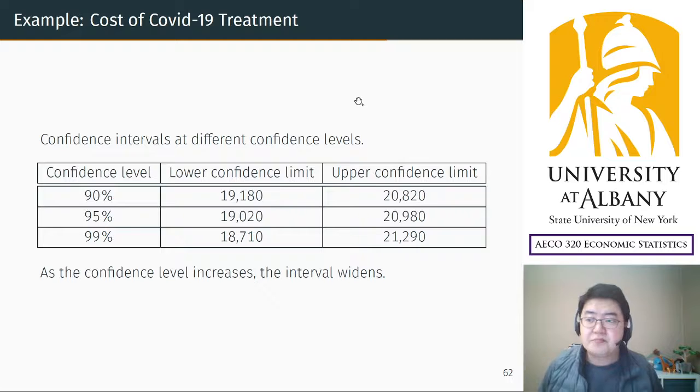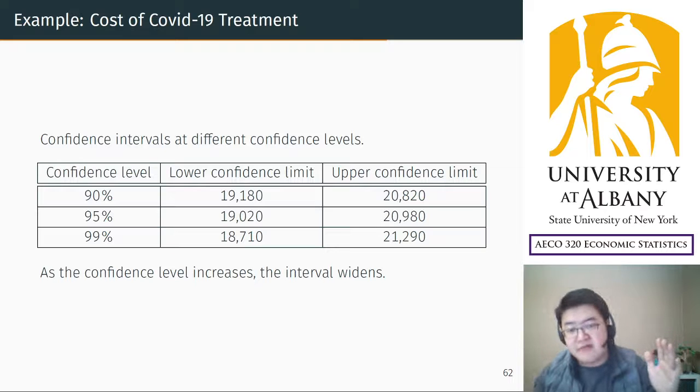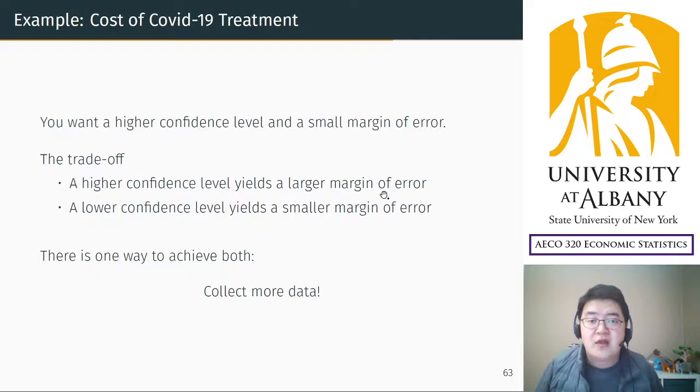Let's compare the results at different confidence levels. As confidence level increases from 90 to 95 to 99, the lower confidence limit decreases because as the interval increases, the lower side becomes even lower and the upper side becomes even larger. So the interval widens. It becomes wider.